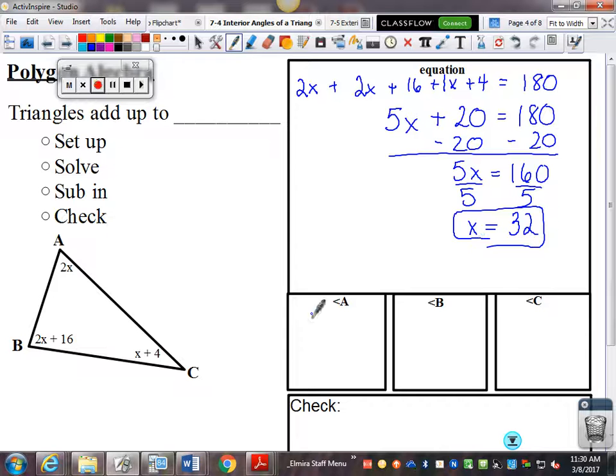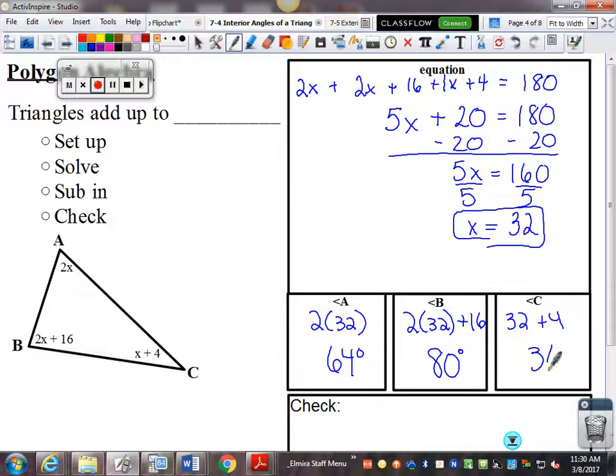So, x is 32, sub in. 2 times 32 is 64. And, then we have 2 times 32 plus 16, that's 80. And, lastly, we have 32 plus 4, 36.